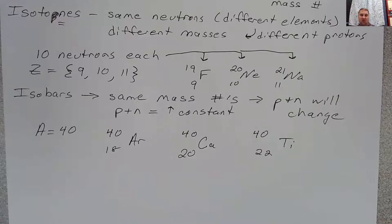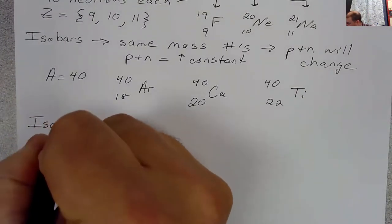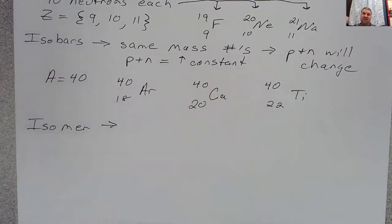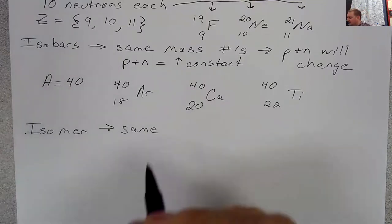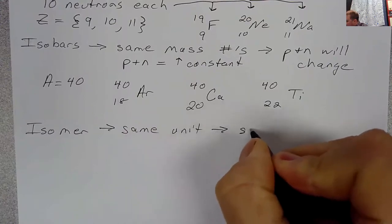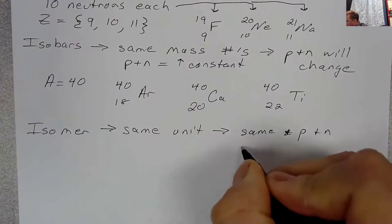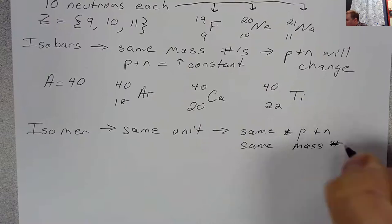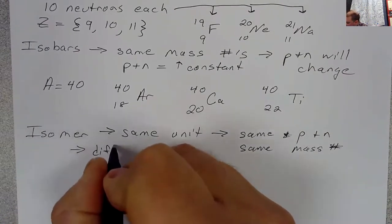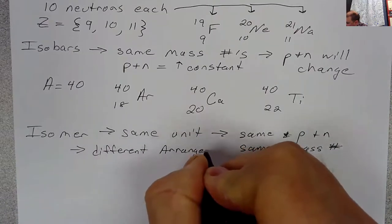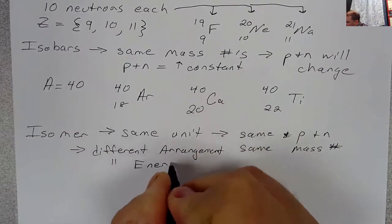And the final example is an isomer. And this still has iso, so we've still got same in our name. Mer, if you think back to biology, you might recall learning about polymers and monomers. Monomers would be single units. Polymers would be many units. Carbohydrates, proteins, nucleic acids, lipids, those are all polymers. So those are many units in a polymer. So an isomer would be the same unit. So really what this is, is it's the same protons and neutrons, same protons and neutrons, same mass number. So what's going to be different here is a little bit trickier to think about. And what's going to be different here is the arrangement. In other words, a different energy within the system.